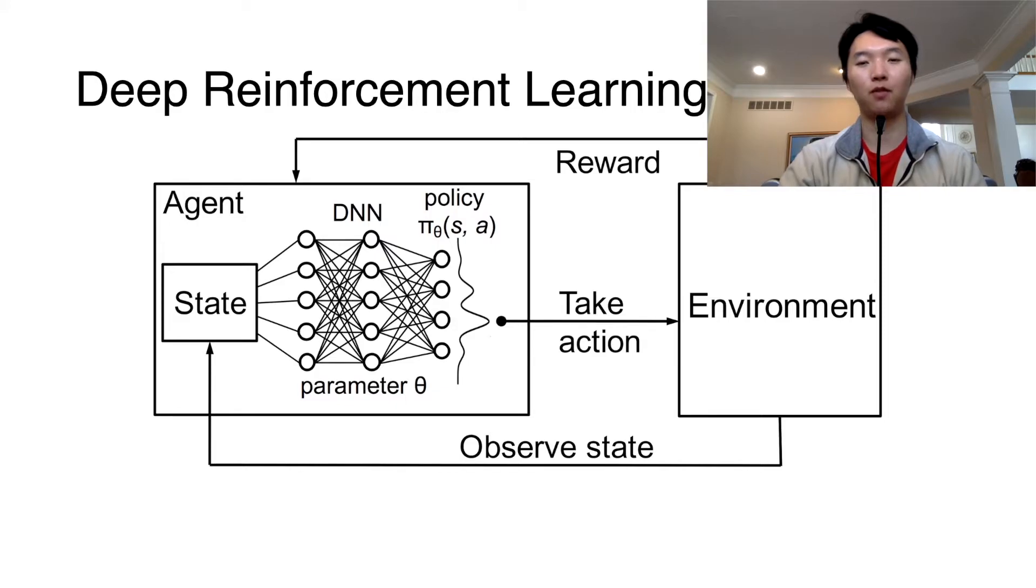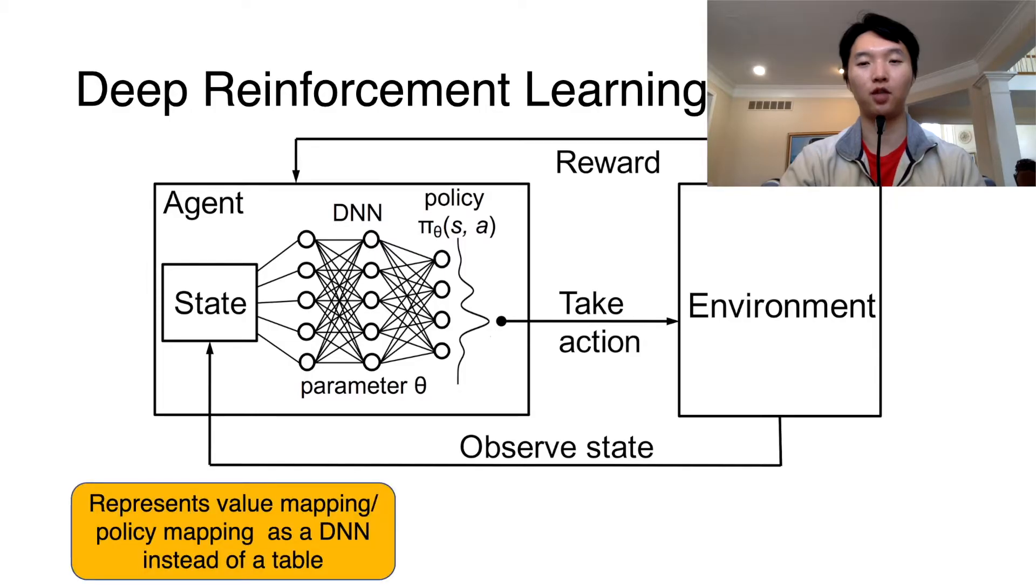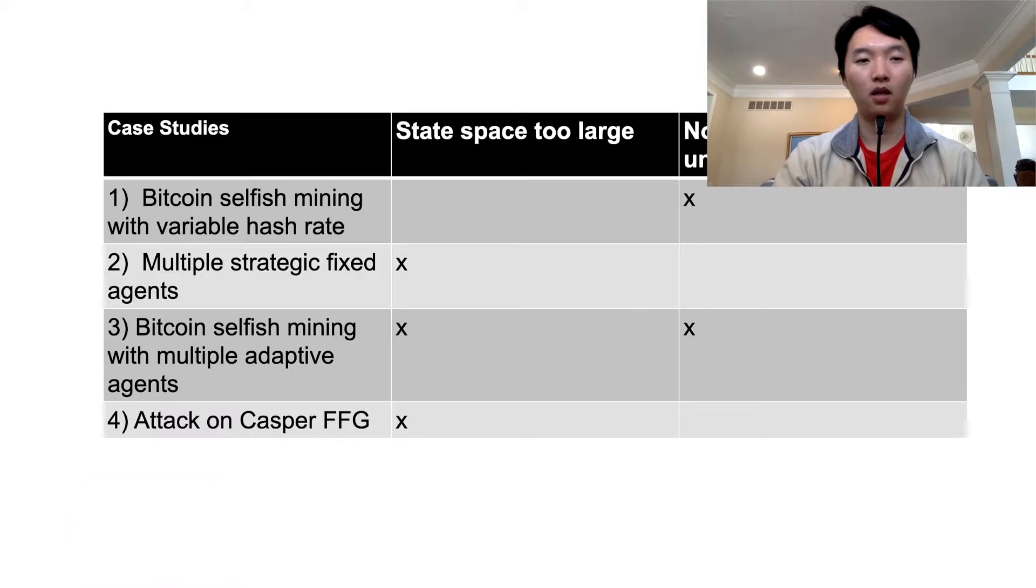Our solution is to use Deep Reinforcement Learning, which represents a policy as a function parameterized by a neural network rather than a function represented by a table. Furthermore, DeepRL is adaptable and trains as it goes, which allows us to use it in a non-stationary setting. In the case study section of the paper, we study scenarios where using policy iteration will fail because either the state space is too large or the environment is non-stationary or unknown.